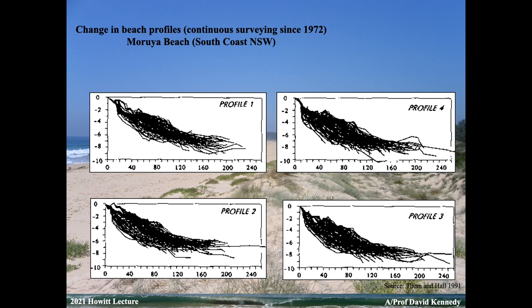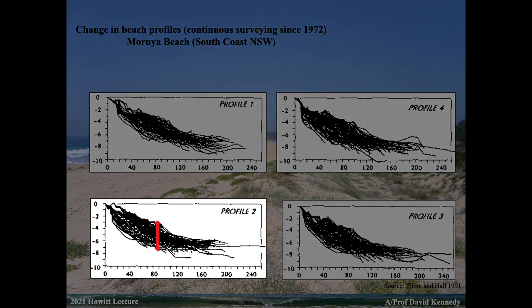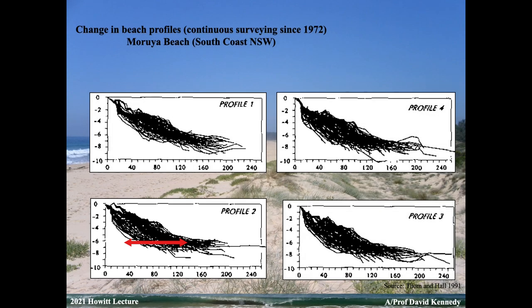This is the survey data — a blur of lines representing individual profiles. On the x-axis we have distance: 0, 40, 80, 120 metres. On the y-axis, depth from the back of the profile. Each black line is one profile. What it defines is a beach envelope — that volume of sand used as the profile moves offshore. We're seeing about five metres vertical movement and 100 metres lateral movement on these beach profiles. That's the natural movement.